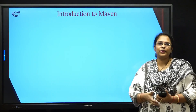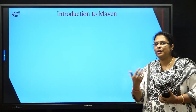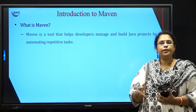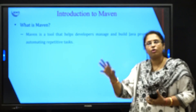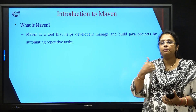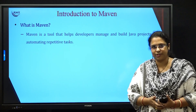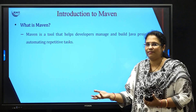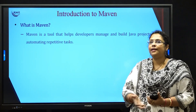Let us start today with understanding what you mean by Maven and what you mean by a build tool. Maven is basically a build tool which automates whatever the process or the sequence of steps that your developers are performing in building the Java project as well as in managing the Java project. It is a build tool which automates everything done by the developer while developing and deploying your particular Java project.